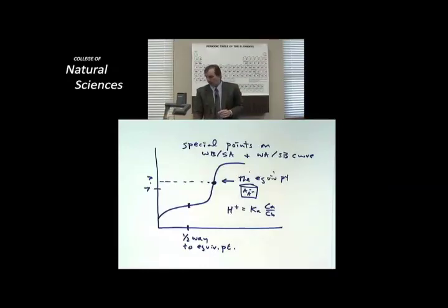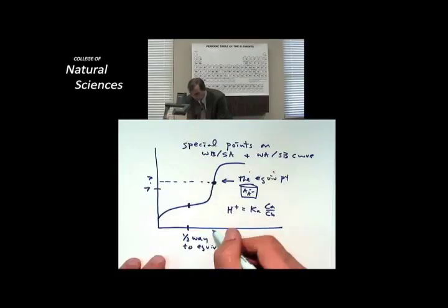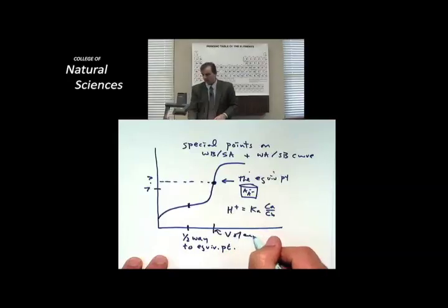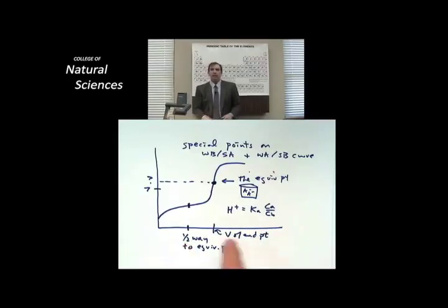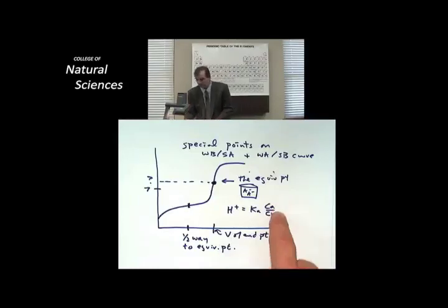In other words, whenever I am halfway to the volume of the end point, the ratio of the CA to the CB has to be equal to the number one.